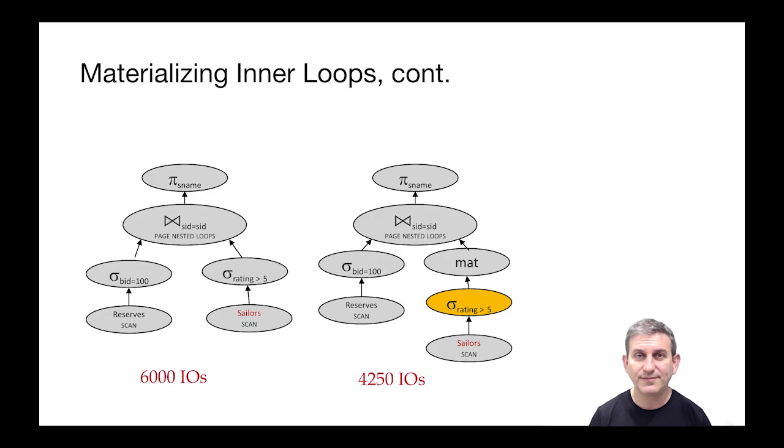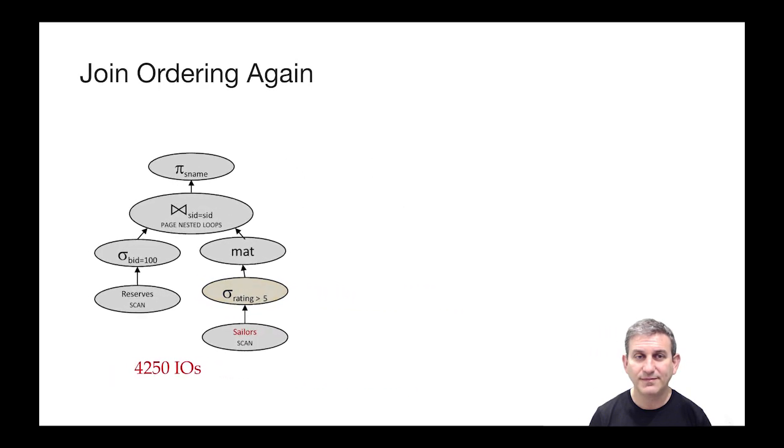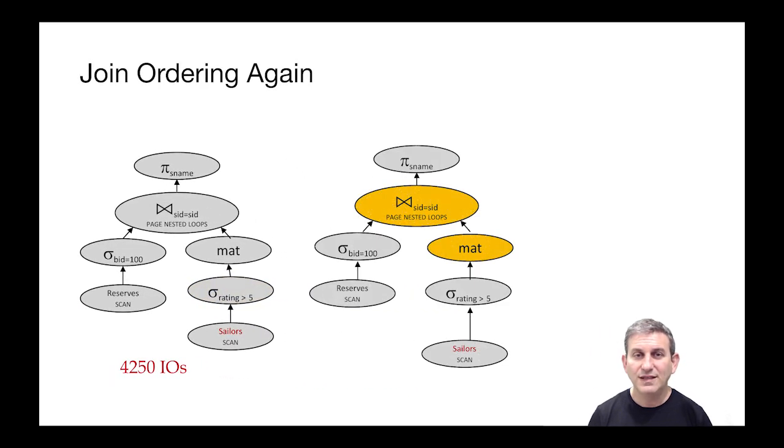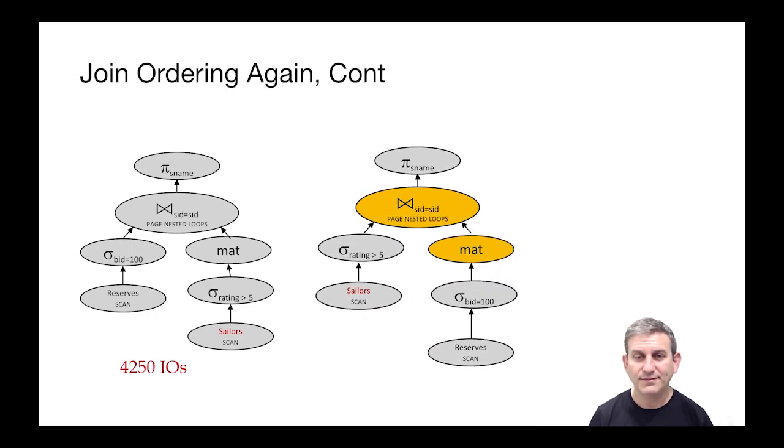Now let's try flipping the join order again back to where it was before with this materialization trick and see what we get. So now Sailors is on the left, Reserves is on the right, but we're going to do the materialization of Reserves.